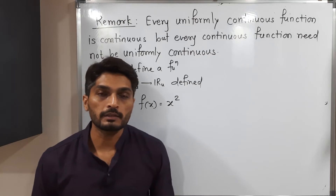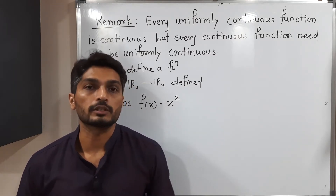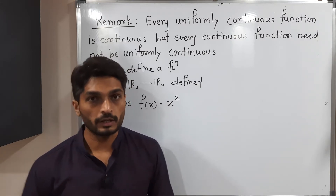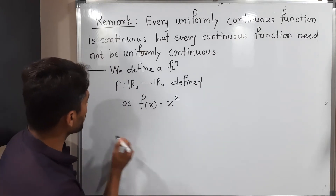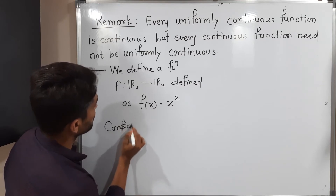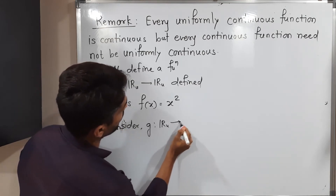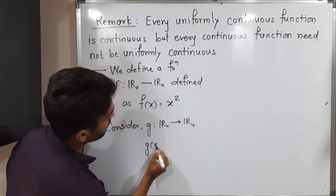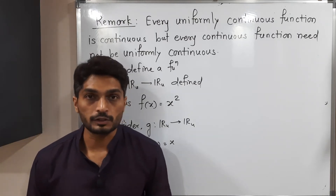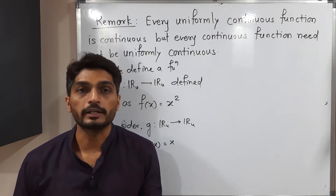So this function I have considered is f(x) = x². First I will prove that it is continuous, and after that we will prove that it is not uniformly continuous. Before that, I will define a new function. Consider g from ℝ to ℝ such that g(x) = x. So you know that it is the identity function, and it is easy to prove that it is continuous.